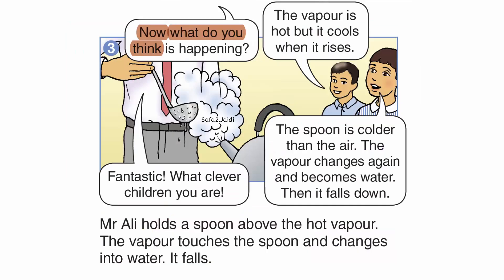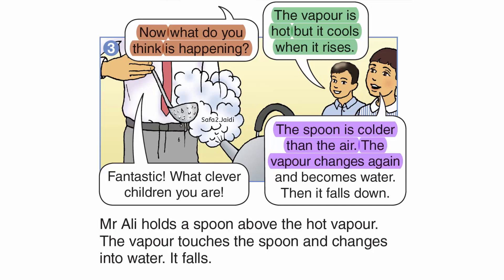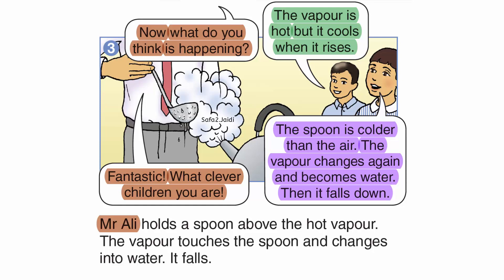Mr Ali asks, 'Now what do you think is happening?' The vapour is hot, but it cools when it rises. The spoon is colder than the air. The vapour changes again and becomes water, then it falls down. Mr Ali holds a spoon above the hot vapour. The vapour touches the spoon and changes into water. It falls.